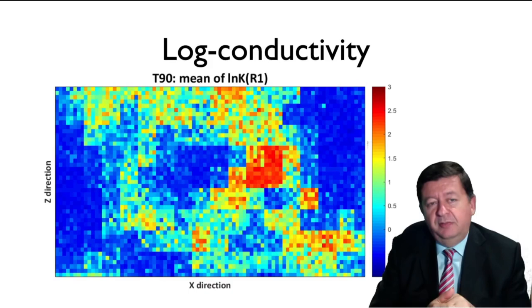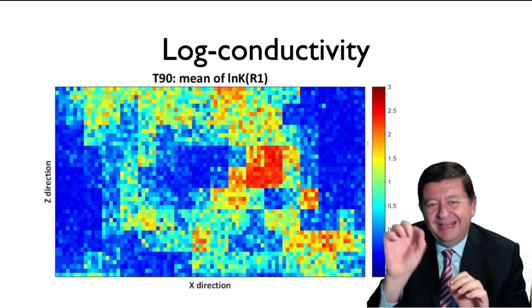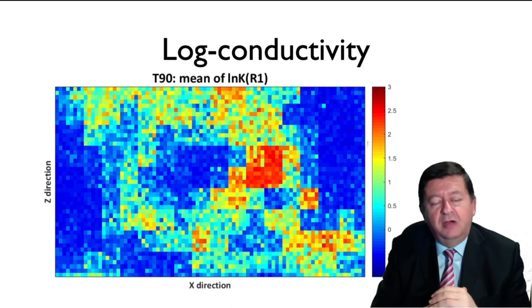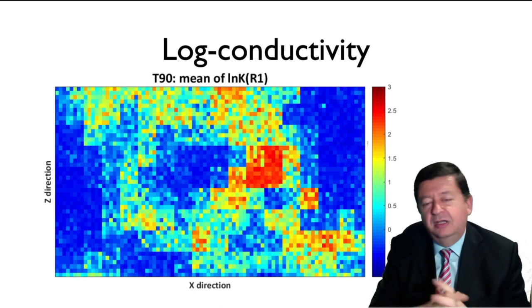These are the results — the final estimation of the conductivity that we obtain, made on a very fine grid. We are making estimates of the conductivity in a very fine distribution of the sandbox, and basically it is capturing the structure of the high values and low values of conductivity.